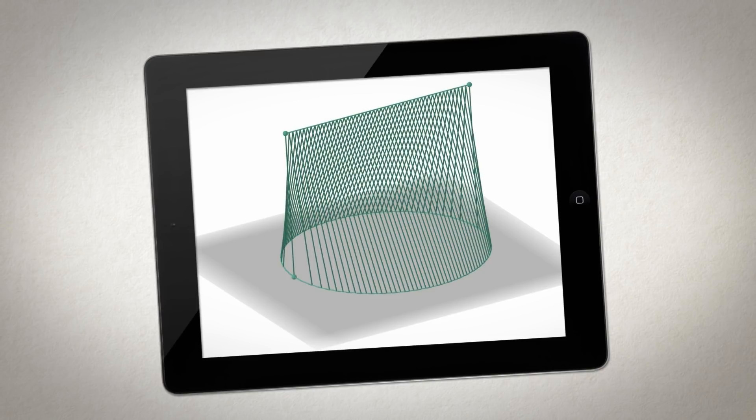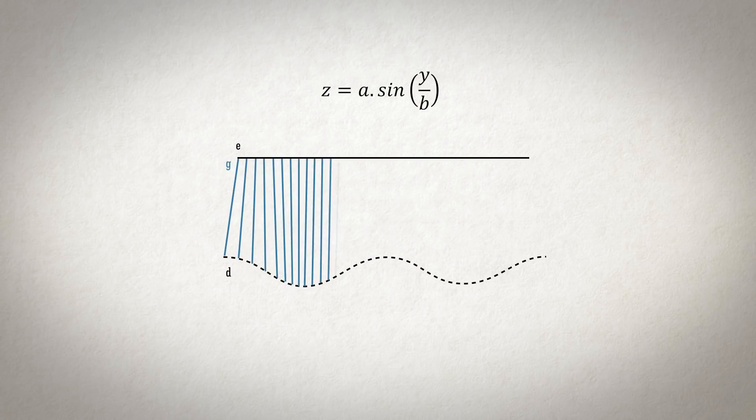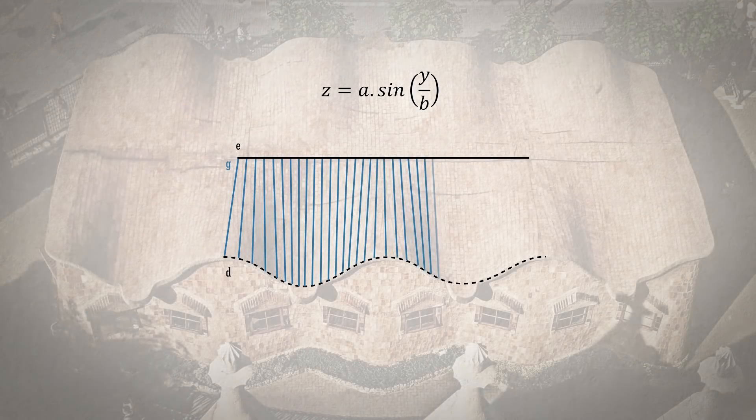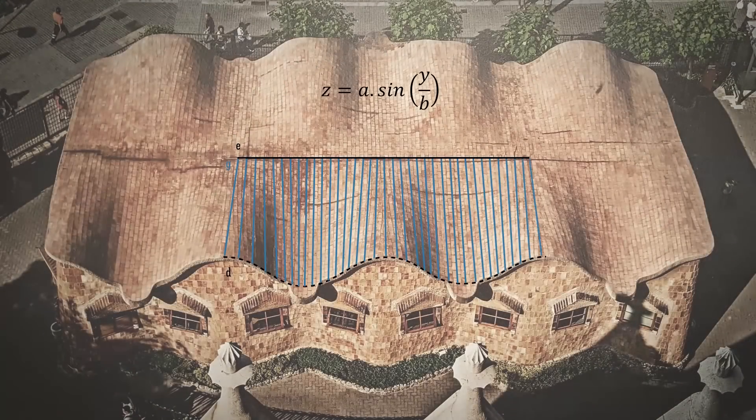Let's make a second experiment. Instead of a circumference, let's use a sinusoidal directrix to generate a sinusoidal conoid, the conoid that Gaudí applied in the wall and roof geometry of the Sagrada Familia School.